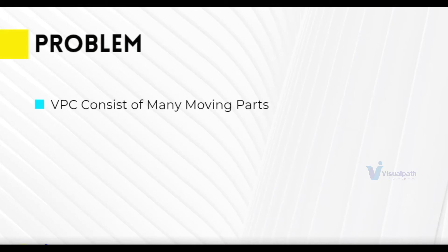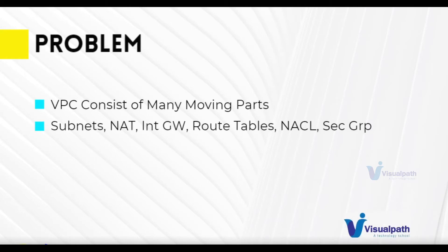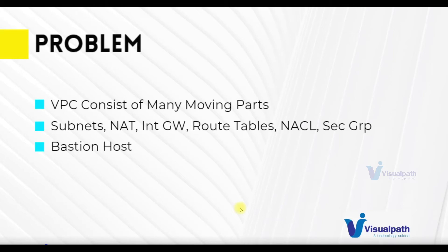As you know, a VPC consists of many moving parts. When setting up a VPC you have subnets, NAT gateways, internet gateways, route tables, NACL rules, security groups, instances, elastic IPs, and much more. Not to mention the bastion host, also called a jump server, which is used to have SSH or RDP connections to instances in a private VPC — a single point of entry from a public network into your private network.